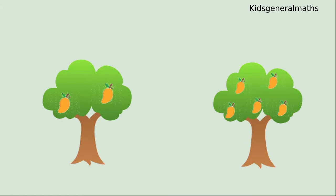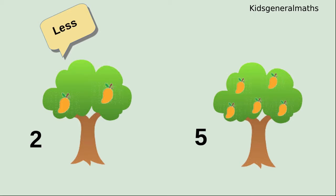Next we are going to compare these two trees. 1, 2. The first tree has 2 mangoes. 1, 2, 3, 4, 5. The next tree has 5 mangoes. While comparing these two trees, 2 is less and 5 is more.